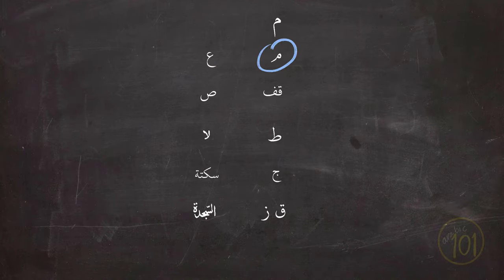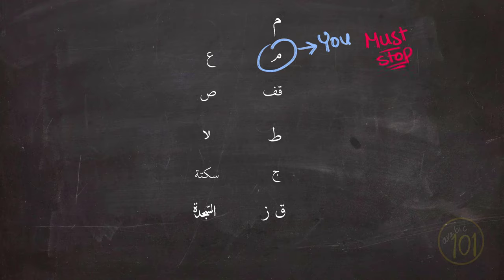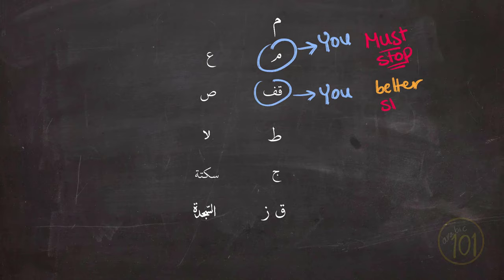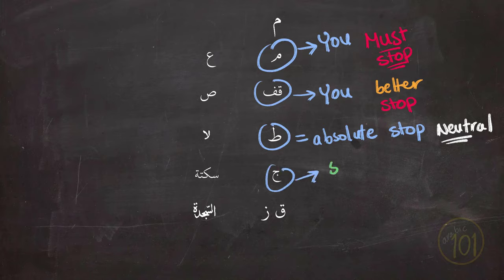So to recap, Meem with its two forms means that you must stop here, otherwise the meaning will change. Qif means that it is better to stop here. Ta is the absolute stop. It's not related to obligation or permission, but it means that it's the end of a sentence at which you can stop or discontinue recitation. Jim refers to 50-50 chance to stop or go.